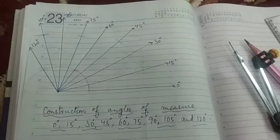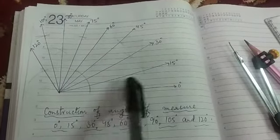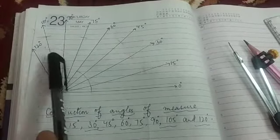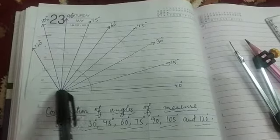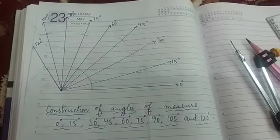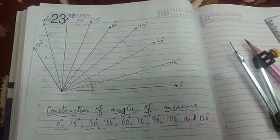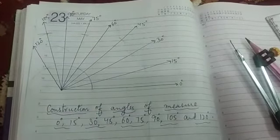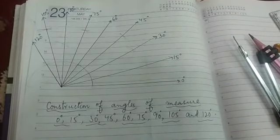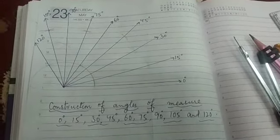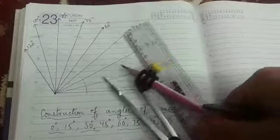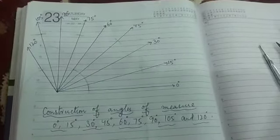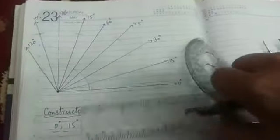Okay, so I have constructed the angles of 0 degree, 15, 30, 45, 60, 75, 90, 105, 120, and 180 as well. Students, with the help of this protractor everyone can draw the angles, but in this case we are going to construct the angles. Whenever the question is that we have to construct the angle, then we have to use this compass and the ruler only. For drawing the angle we use the ruler and the protractor.